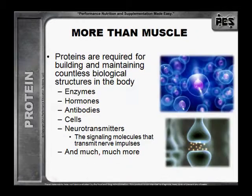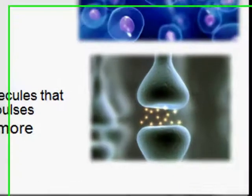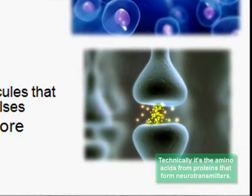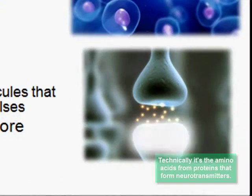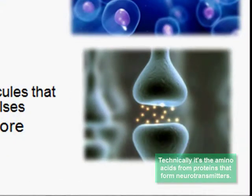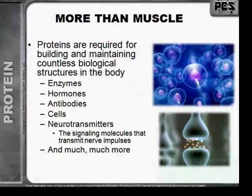Proteins are required for building and maintaining countless biological structures in the body — things like enzymes, hormones, antibodies, cells, neurotransmitters, which are the signaling molecules that transmit nerve impulses, and much, much more.